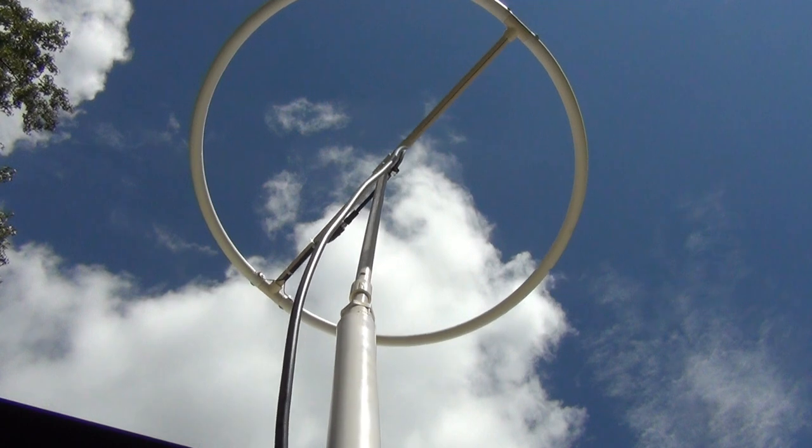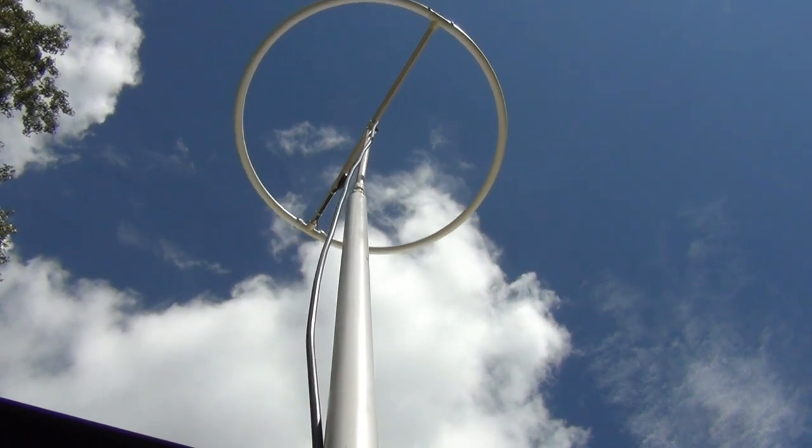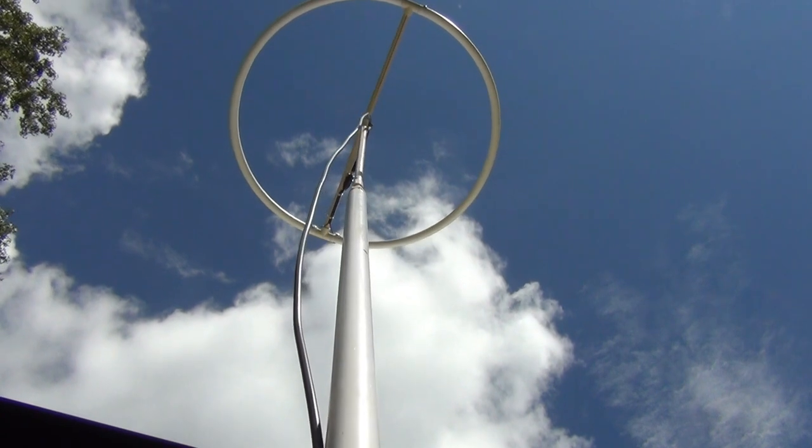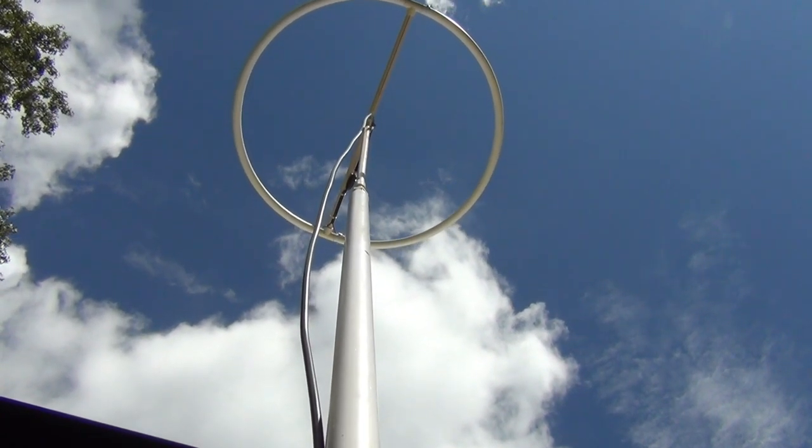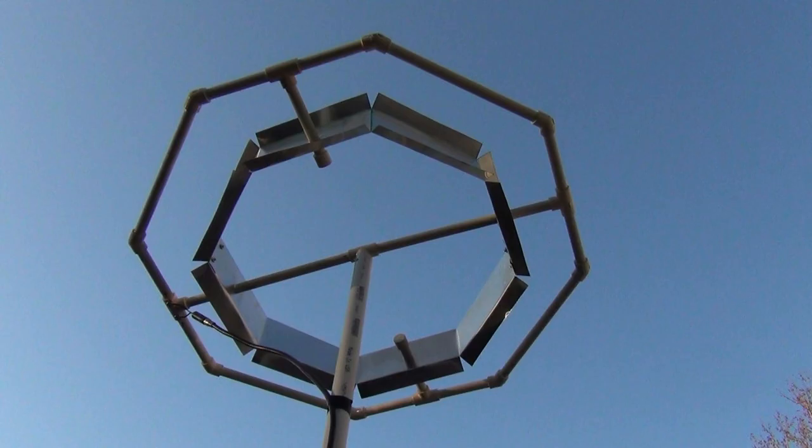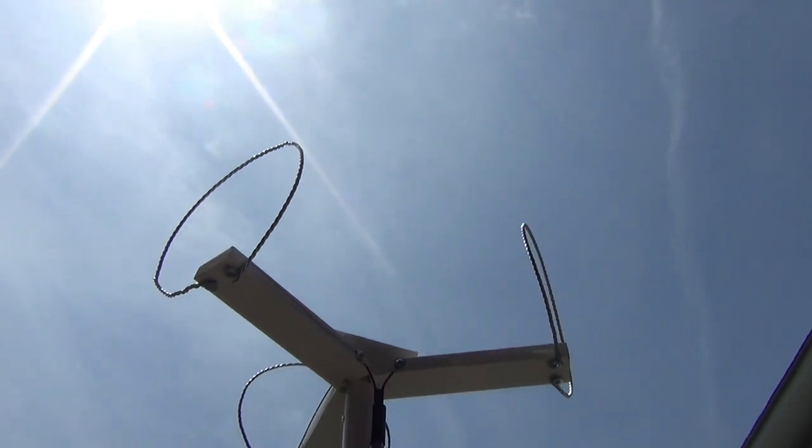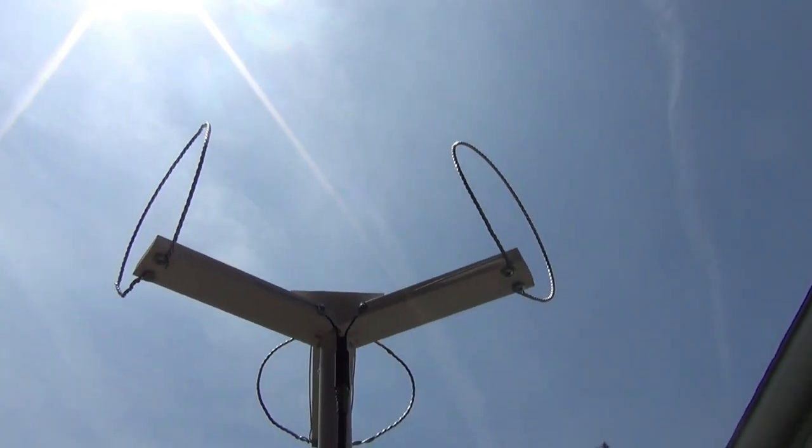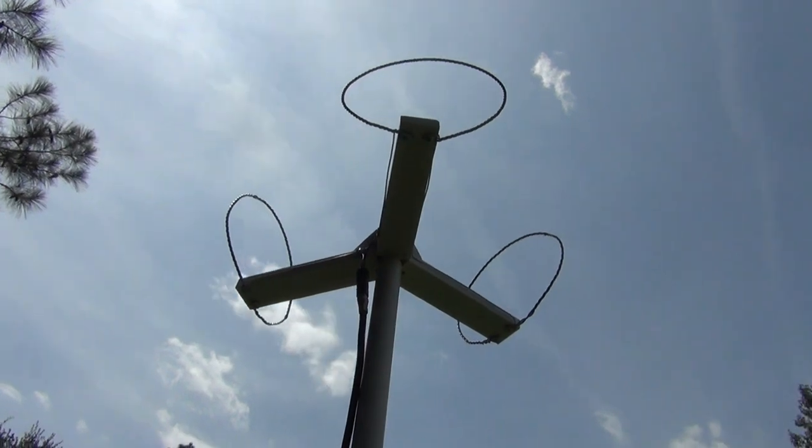I have previously posted videos on how to build two really good multi-directional antennas, the hoop and the octagon. Many people have built these antennas and they tell me they are very happy with how they perform. But both of these antennas are fairly large, and in some situations they may not be the best specific design for you. For these situations I have developed a much smaller antenna that still gets very good reception and performance. I call this design the tri-tenna.